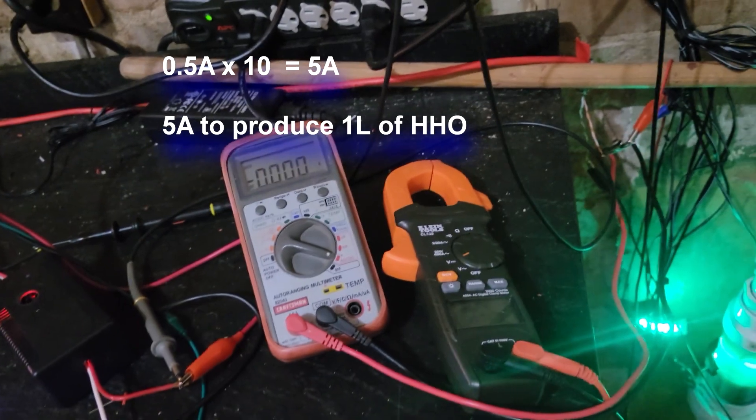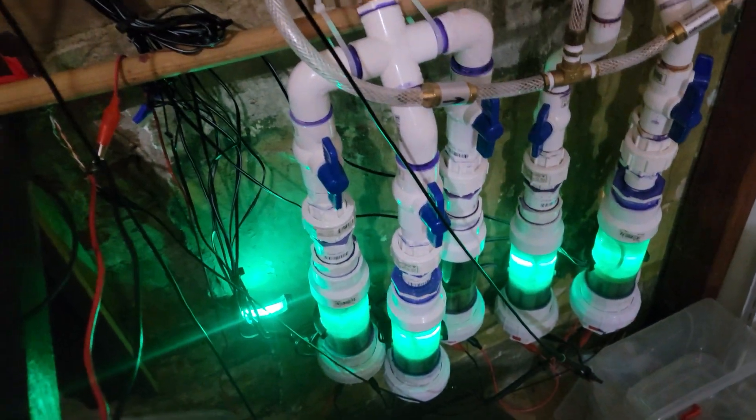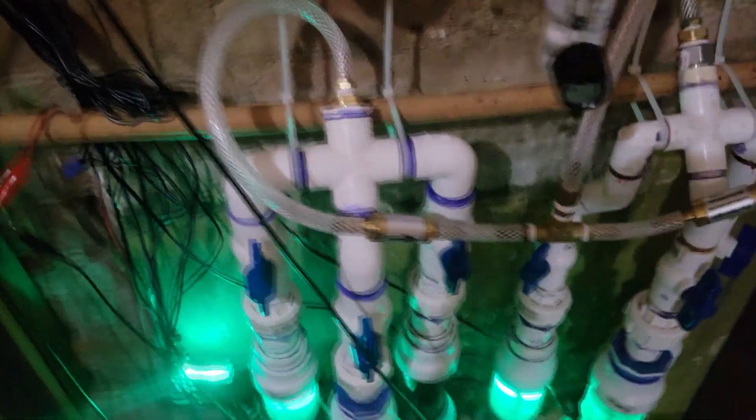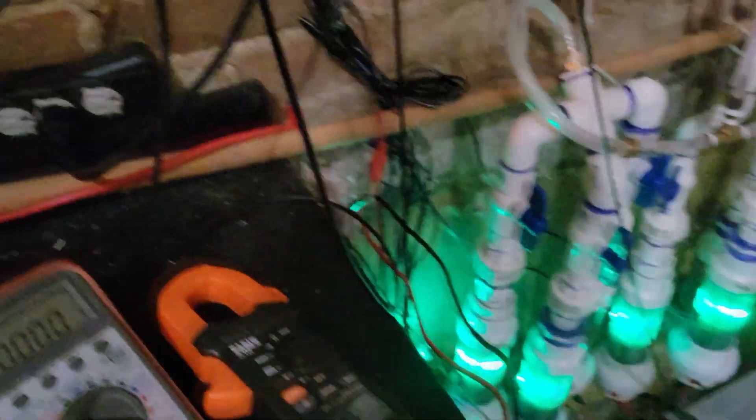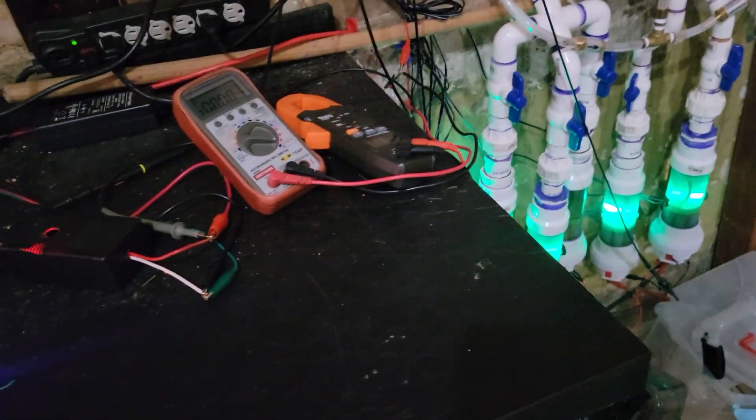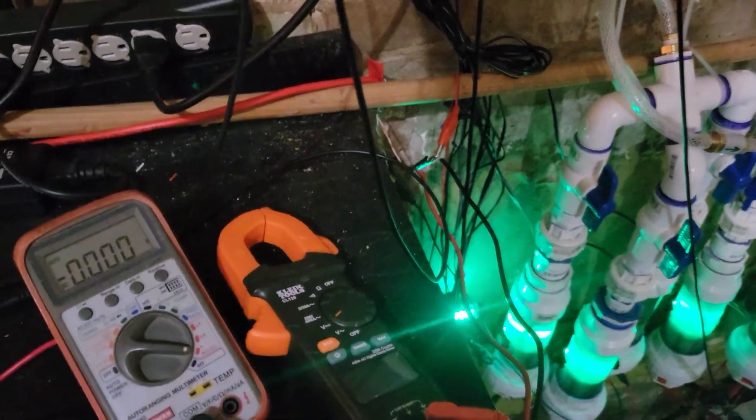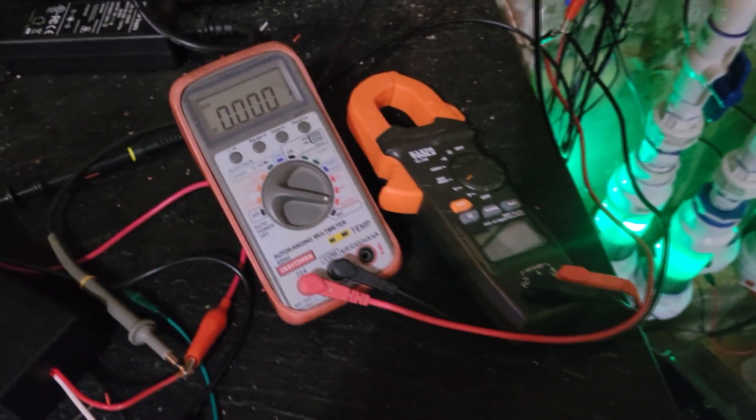That is well under the amount of energy required for DC electrolysis to create one liter of hydrogen. At traditional electrolysis you would need 30 amps, something of that nature. So amperage definitely is mathematically much lower.